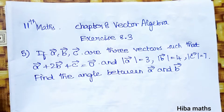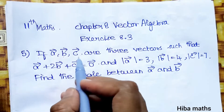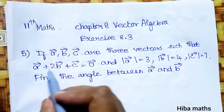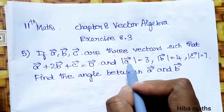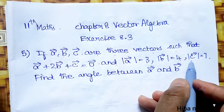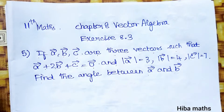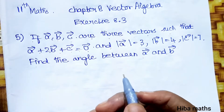Hello students, welcome to Heba Max. 11th standard Maths, Chapter 8 Vector Algebra, Exercise 8.3, fifth question. If a vector, b vector, c vector are three vectors such that a vector plus 2b vector plus c vector is equal to zero vector, and modulus of a vector equals 3, modulus of b vector equals 4, and modulus of c vector equals 7, find the angle between a vector and b vector.